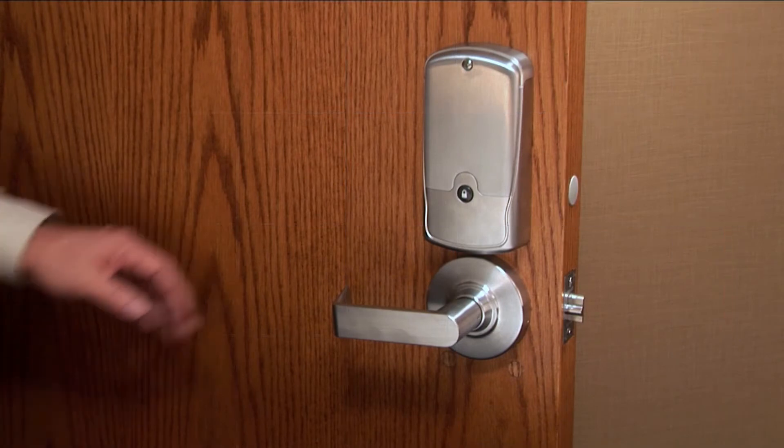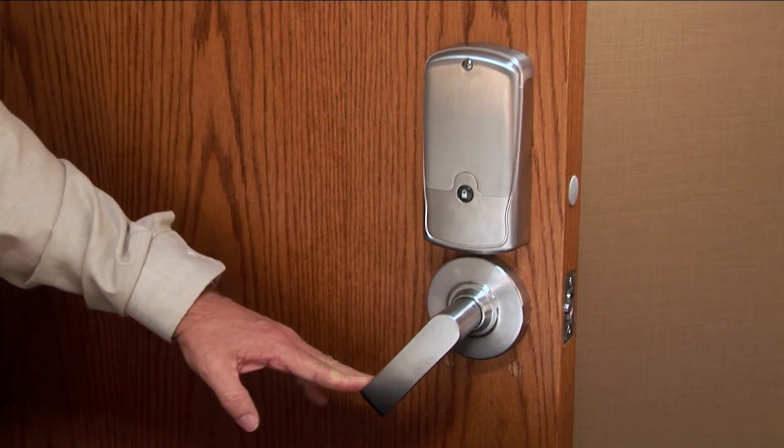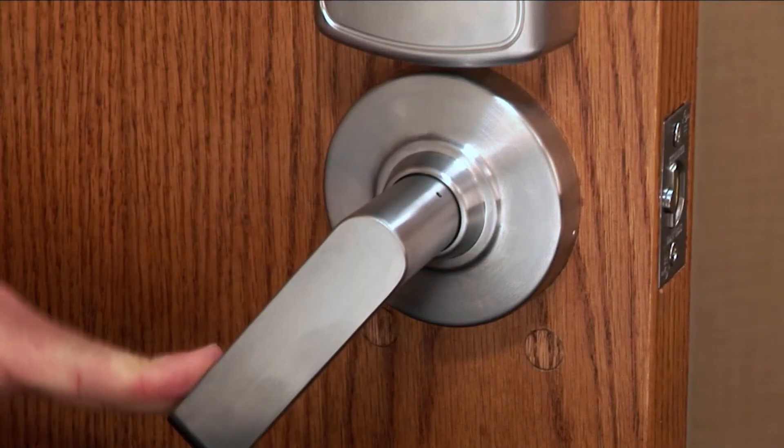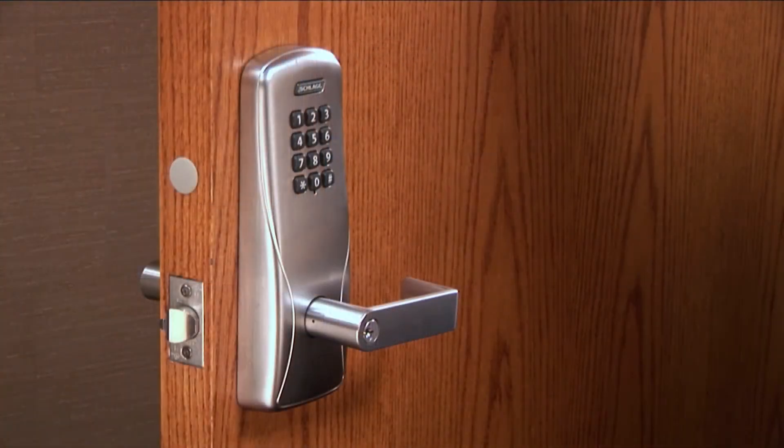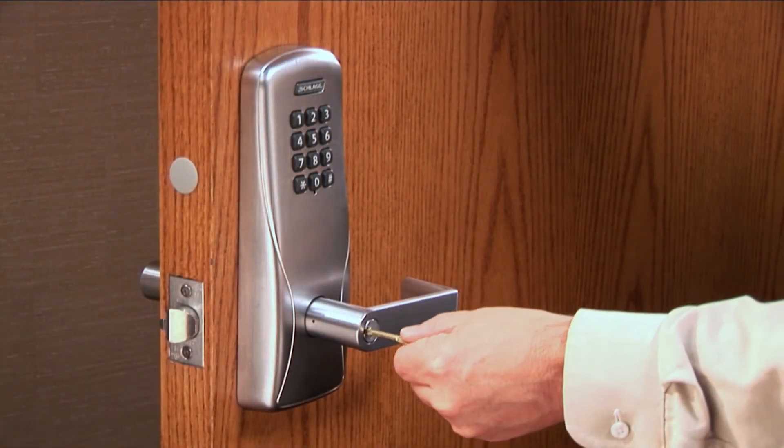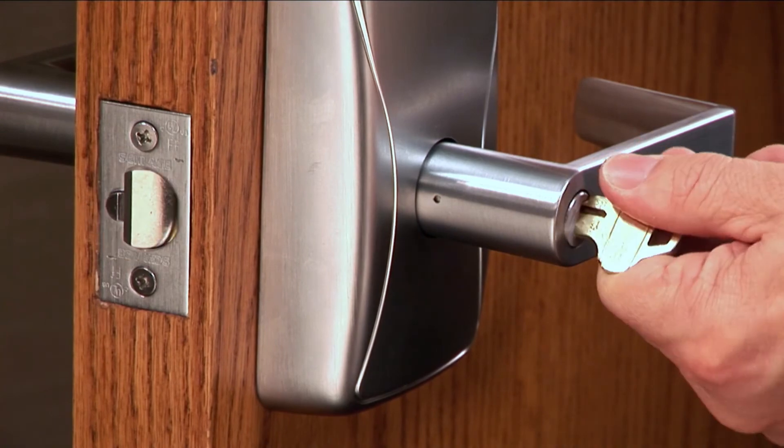To check for correct mechanical operation, depress the inside lever and make sure the latch fully retracts. On the outside lever, insert the key and turn to verify full latch retraction.